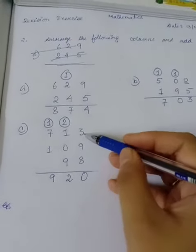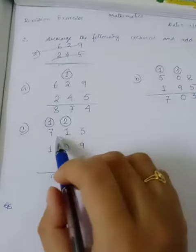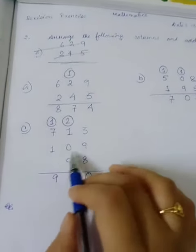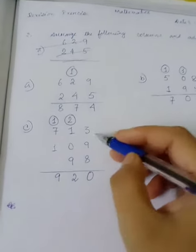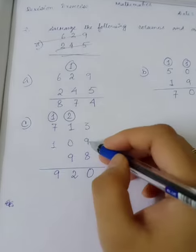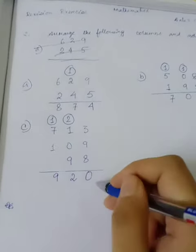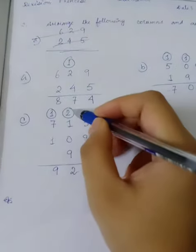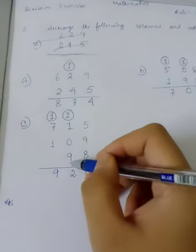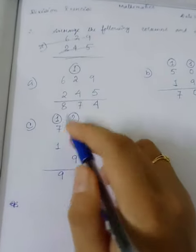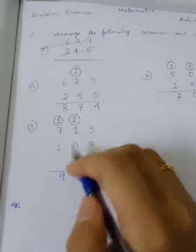Add those 7, 1, 3 plus 1, 0, 9 plus 98. So 9 plus 3 equals 12, 12, 12 plus 8 equals 20. 0, 2 is carry over. 2 plus 1 equals 3. 3 plus 9 equals 12. 1 is carry over. 2 plus 1 equals 8. 8 plus 1 equals 9. Thank you.